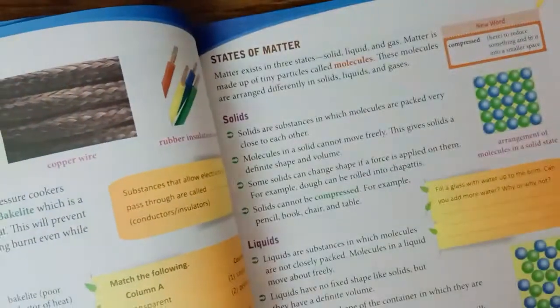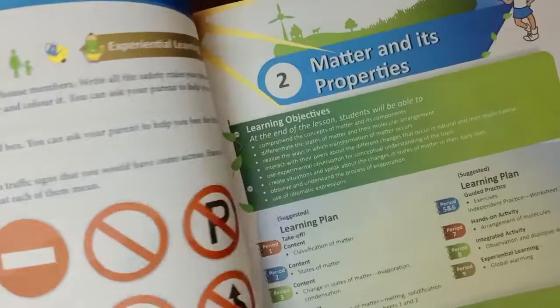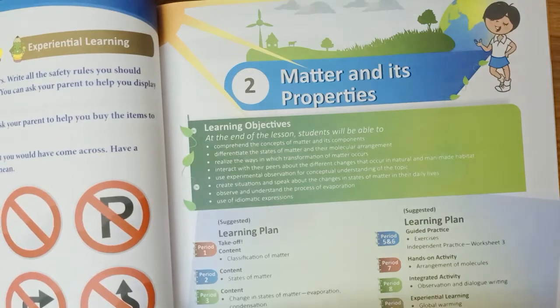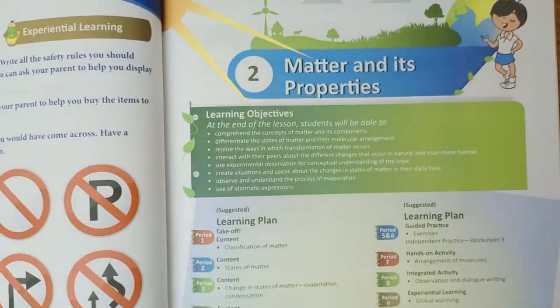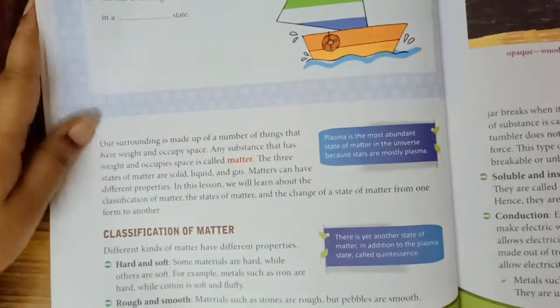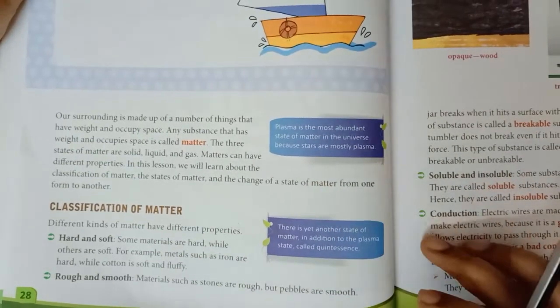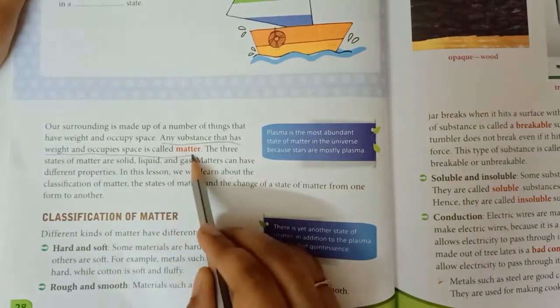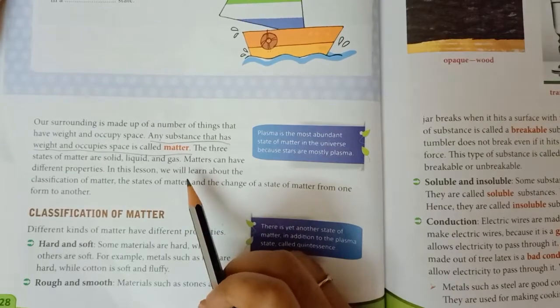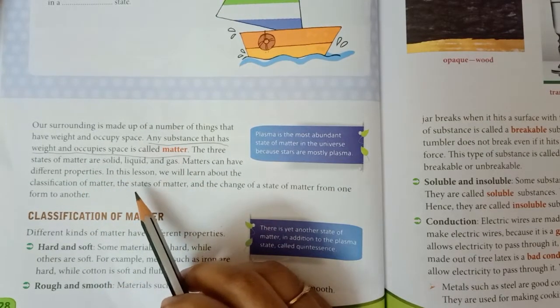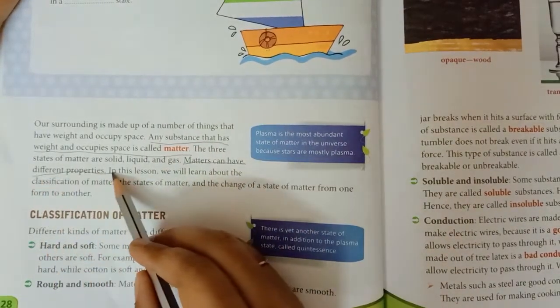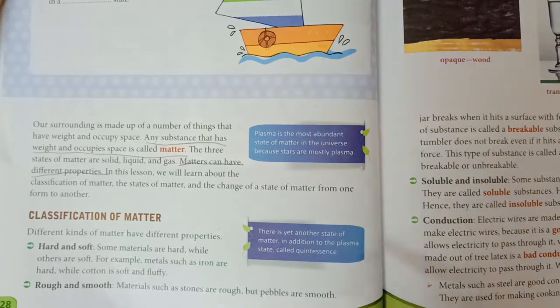Take your textbook. First, we will start with our second chapter. The topic of the chapter is Matter and its Properties. Take page number 28. Any substance that has weight and occupies space is called matter. Matters can have different properties.